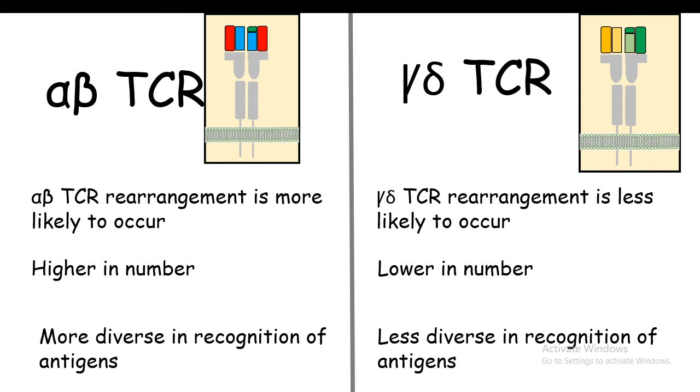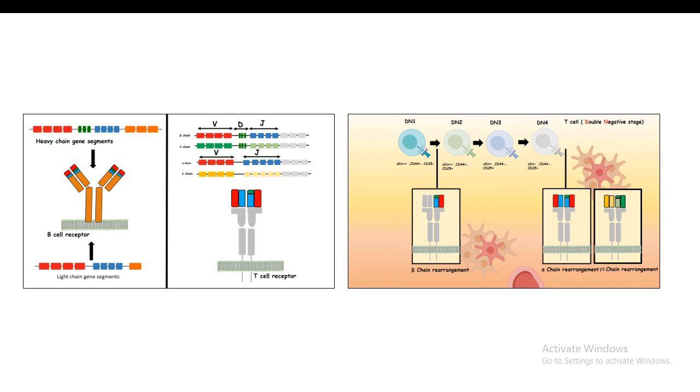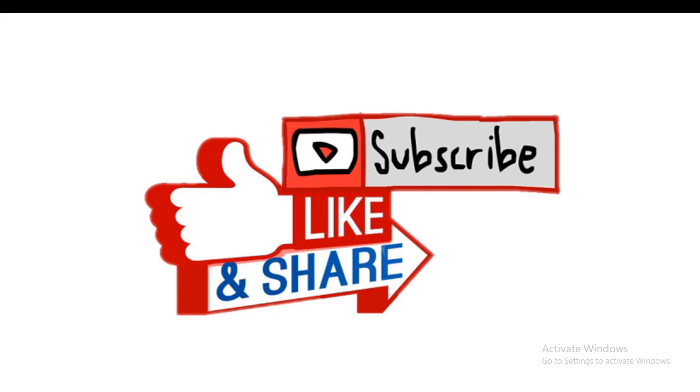In this video we appreciated that just like the B cell receptor, T cell receptor also undergoes VDJ recombination, and that is one of the mechanisms by which diversity in terms of antigen recognition is taking place. We also looked at exactly which temporal window these kinds of recombination events are taking place and where it is taking place. If you like this video, give it a quick thumbs up. Don't forget to like, share, and subscribe. Thank you.